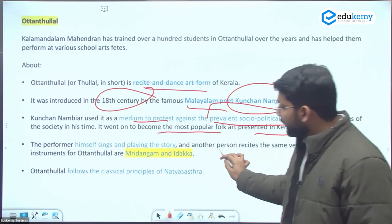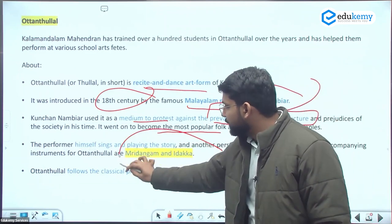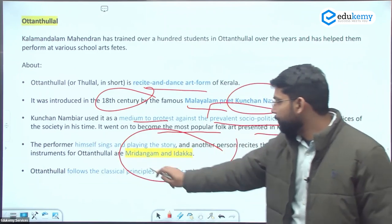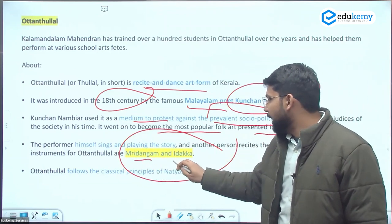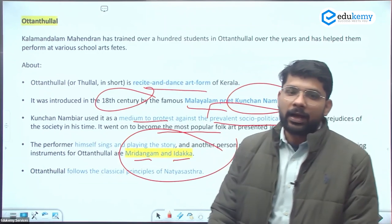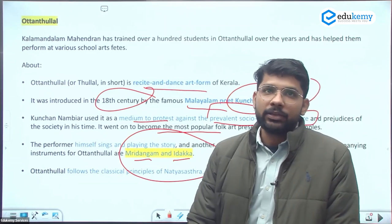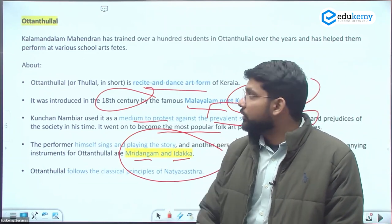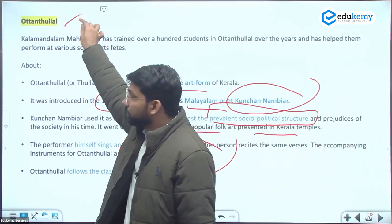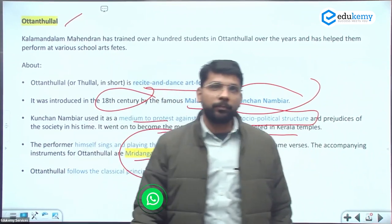The instruments used with this dance art form are the Mridangam and the Idakka. These are the instruments that accompany the Ottanthullal dance art form.